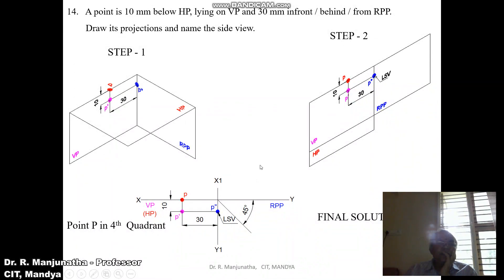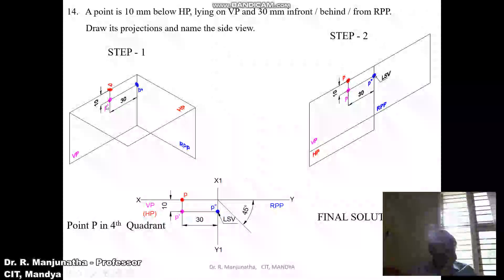The distance of 30mm in front of RPP can be seen in the vertical plane from the front view and in the horizontal plane from the top view. When looking from the side view, P dash and P double dash will be on the same line.